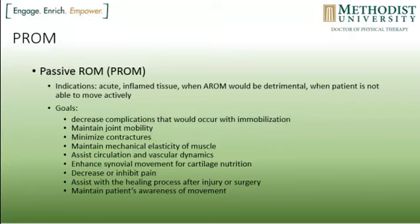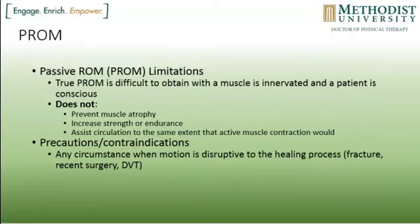When do we use passive range of motion? It is good for acute inflamed tissues when active range of motion would be detrimental, such as when there is recently repaired tissue, or when the patient is not able to move actively — such as when they are paralyzed or in a coma. The goals of passive range of motion are to decrease complications from immobilization, maintain joint mobility, minimize contractures, maintain mechanical elasticity of the muscle, assist circulation and vascular dynamics, enhance synovial movement for cartilage nutrition, decrease or inhibit pain, assist with the healing process, and maintain the patient's awareness of movement.